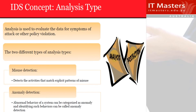The IDS concept is usually about analyzing data to evaluate symptoms of attack. Think about waking up with a headache — you feel the patterns of something being wrong. When it comes to IDSs, one detection method is misuse detection, which tries to concentrate on activities that match explicit patterns of misuse. To make this successful, we need the right patterns installed.